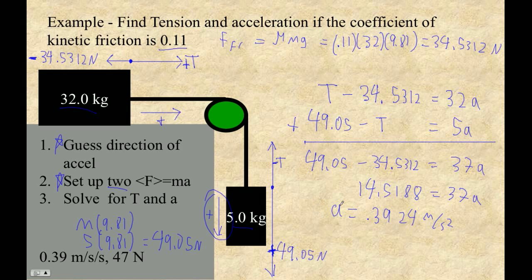Once you get the acceleration, it's easy to find what the tension is. I'm just going to plug it into this equation here. So tension is equal to 32 times 0.3924 plus 34.5312. I get 47.088 newtons for the tension.